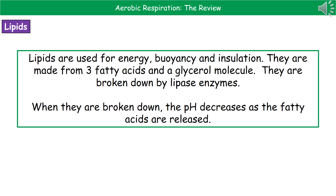The last type of food we're going to look at are lipids. Lipids have three key uses in the body: the first one is energy, the second one is buoyancy — certain creatures that live in water will have a much higher lipid content to make them buoyant so they float better — and the last one is insulation, to protect our organs and insulate our body to stop it losing heat. Every lipid is made from three fatty acids joined onto a single glycerol molecule, and when we break them down, that's carried out by lipase enzymes.